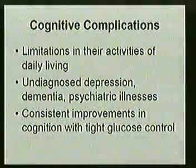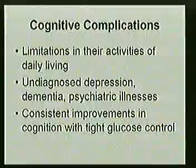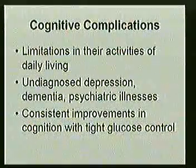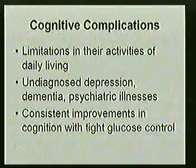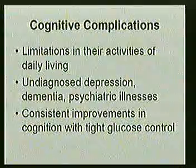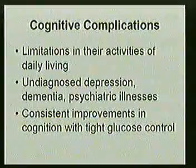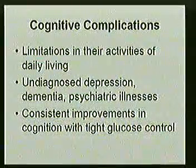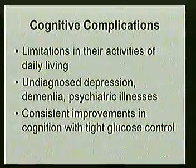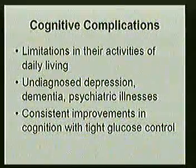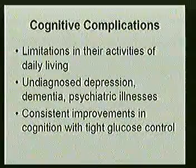Complications are very vague in the elderly. The most important complication of diabetes in elderly is cognitive complications, which manifest as limitation in activities of daily living, undiagnosed depression, dementia, and various psychiatric illnesses. There is evidence that if we manage their hyperglycemia and bring them to tight glucose control, these cognitive dysfunctions are improved drastically — there is a consistent improvement in these functions.